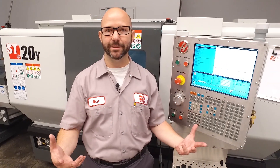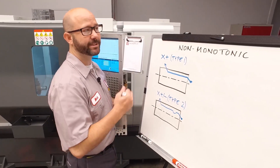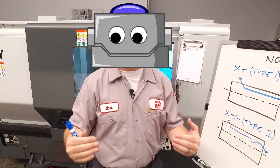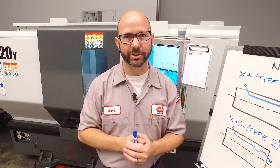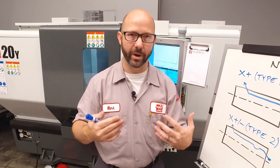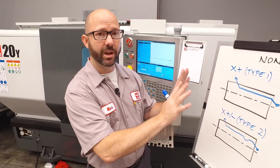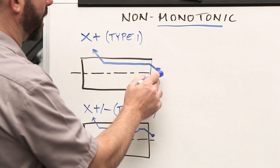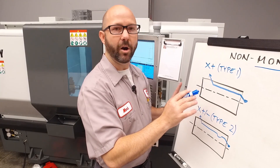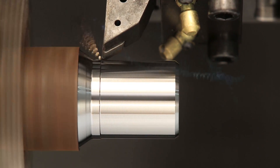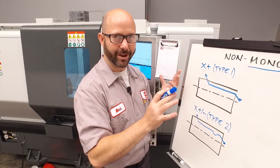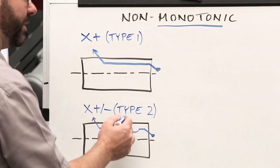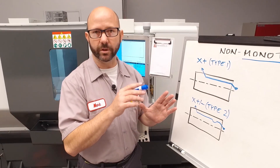What does that mean and how do we fix it? Non-monotonic just means that it's not monotone. A robot speaks in a monotone voice — the pitch doesn't go up, it doesn't go down, it's always moving in one direction. In machining, we can think of it the same way. If something is monotonic, our tool is always going to move in the same direction — in this example, always in the Z-negative and X-positive direction. A non-monotonic cycle would move up, then down, then up again.